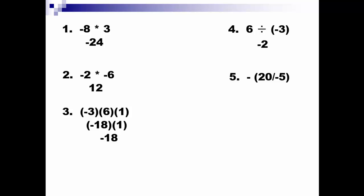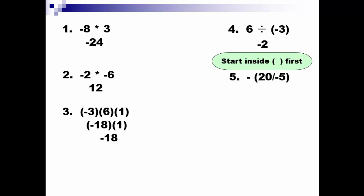Try the next one. Keep in mind when you're working with this one, you always want to start within parentheses first. So you're going to do 20 divided by negative 5, then you'll negate that answer. Take a minute, pause the video, try it out, come on back.